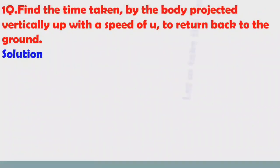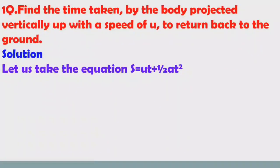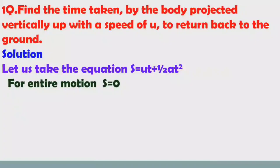Let us take the second equation: S = ut + ½at². For the entire motion, S is equal to zero, because the object starts from the earth's surface, reaches maximum height, and returns to the same point. When an object returns to its starting point, displacement is equal to zero.